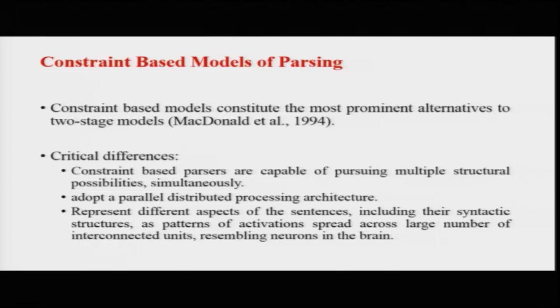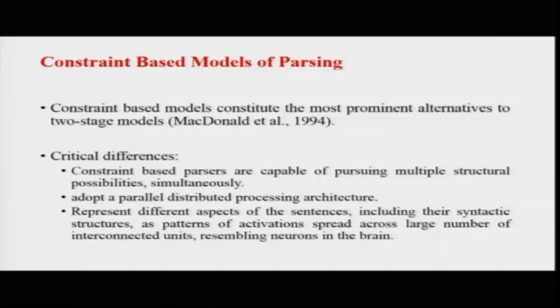One critical difference is that constraint-based parsers are capable of pursuing multiple structural possibilities simultaneously. In the garden path theory, the model can only evaluate one structure at a time — it comes up with one structure, evaluates it for thematic integratability, accepts it if semantically plausible, or goes back and creates another structure iteratively. Constraint-based parsers, by contrast, can come up with possibilities A, B, C and evaluate all of them in parallel.